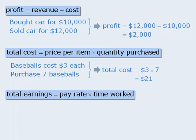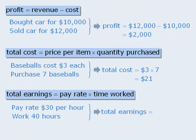On a similar note, we can calculate one's earnings by taking the rate of pay and multiplying it by the time worked. So if someone is paid $30 per hour and works 40 hours, the total earnings will equal 30 times 40 for a total of $1,200.